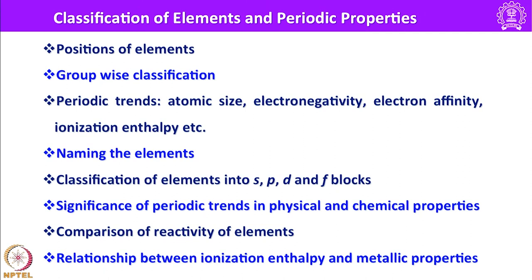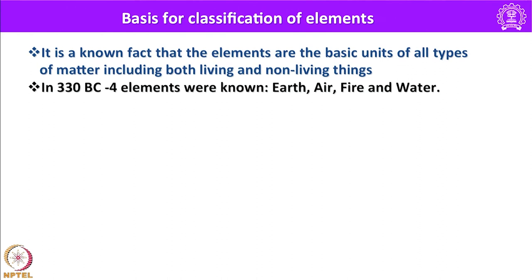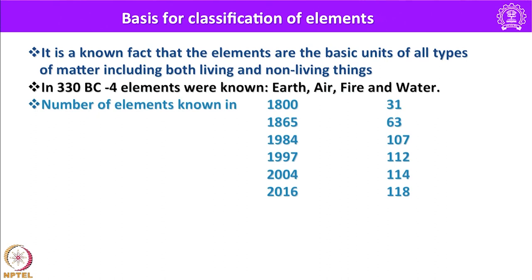The elements are the basic units of all types of matter, including both living and non-living things. In 330 BC only 4 elements were known: earth, air, fire and water. However, in 1800, 31 elements were known, and that number rose to 63 in 1865. In 1984, after almost 120 years, 107 elements were known.